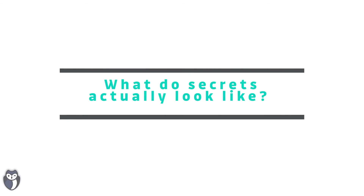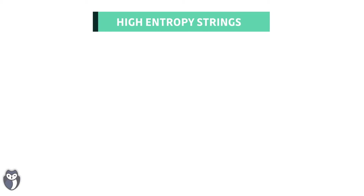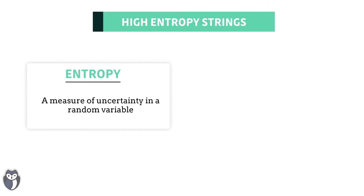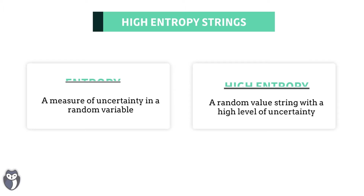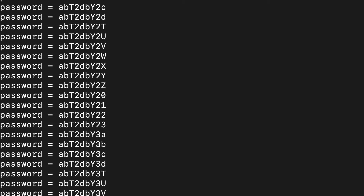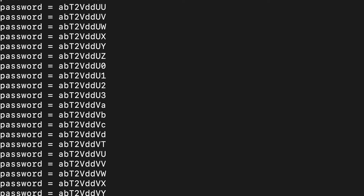So what do these secrets actually look like? Well, typically they are high entropy strings, which means that they are strings or text that are very random in value — they have a high level of entropy or randomness. This is for a lot of reasons: the security reason is that no one can guess it, and also that you can't brute force your way into using a system by going through lots of different variations.